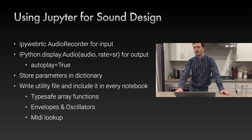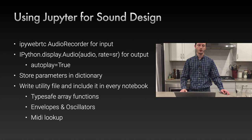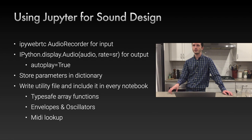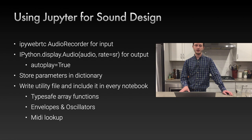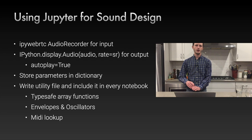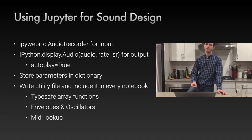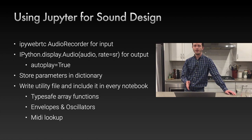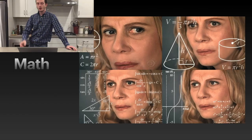Store your parameters in a dictionary so you can tune them without scrolling up and down in your notebook. It also lets you build different presets for functions — like different settings for different songs. Write a utility file: I have a JupyterTools.py with type-safe array functions, envelopes and oscillators like sine, saw, square, and triangle so I don't have to remember those functions, and MIDI lookup so I can convert MIDI note number 60 or MIDI name C4 to frequency.